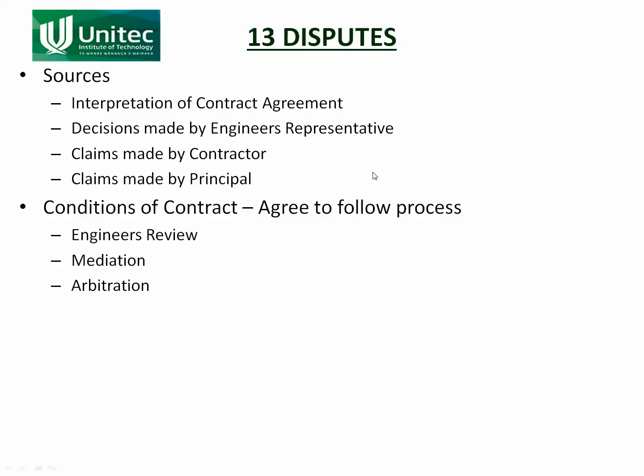Section 13 of NZS 3910 talks about what the two parties are going to do if they are in dispute. That dispute might be an interpretation of the contract agreement — one person might think the contract meant one thing, another person might think it was something else. It might be that one party doesn't like a decision made by the engineer, or one party is claiming something the other doesn't think they're entitled to. The idea of Section 13 is to resolve it between the two parties as quickly as possible and at the least possible cost.